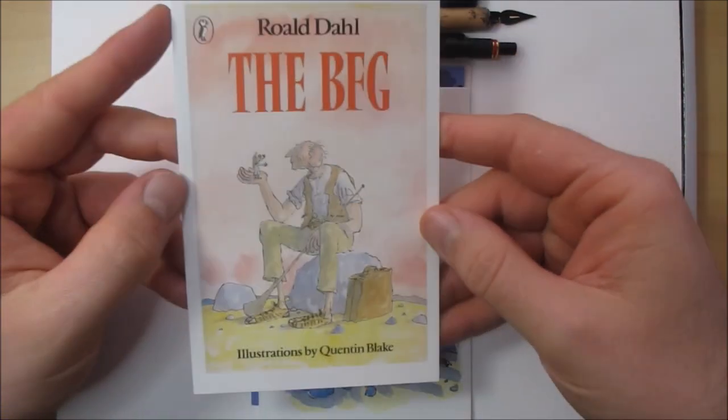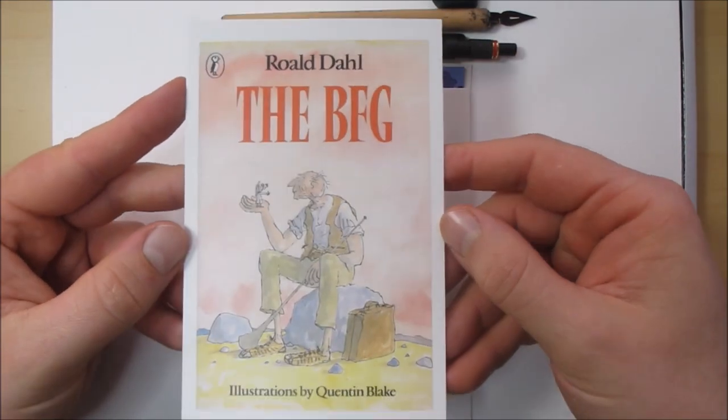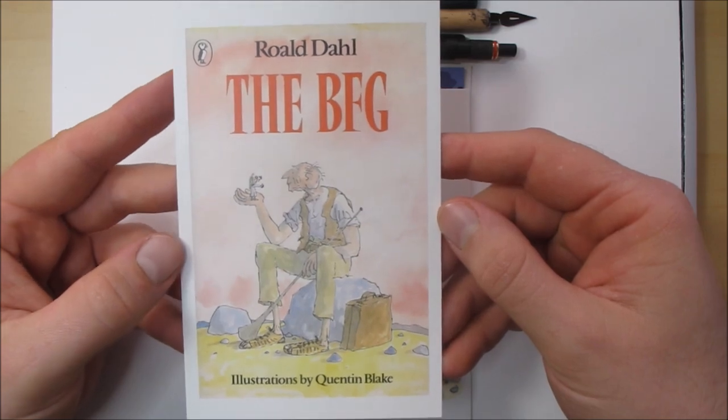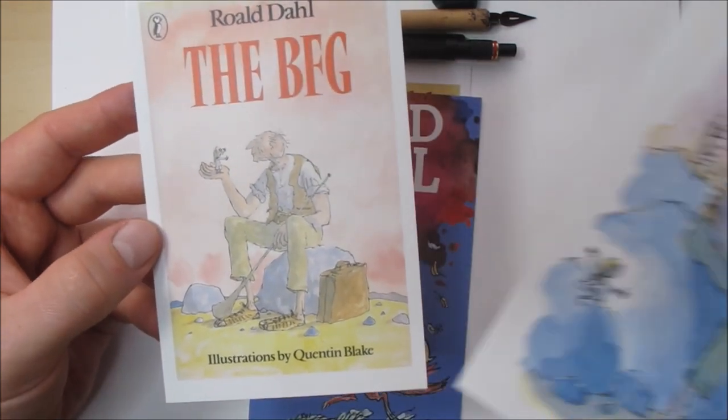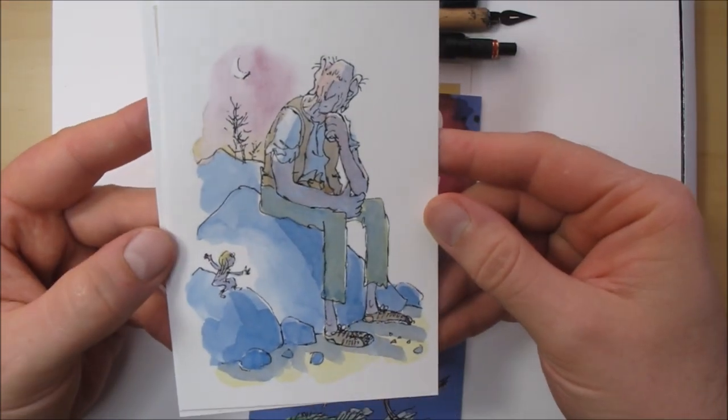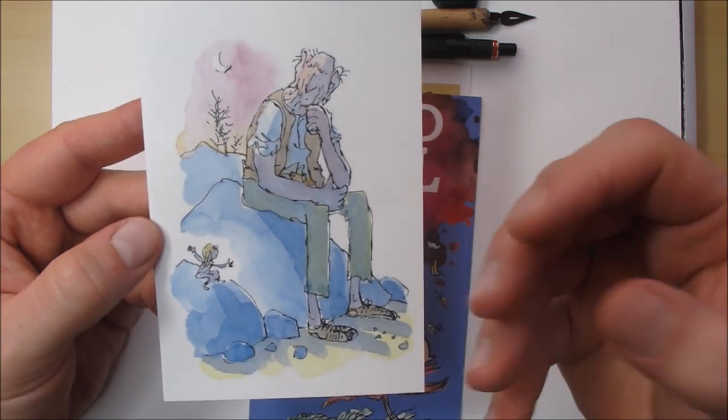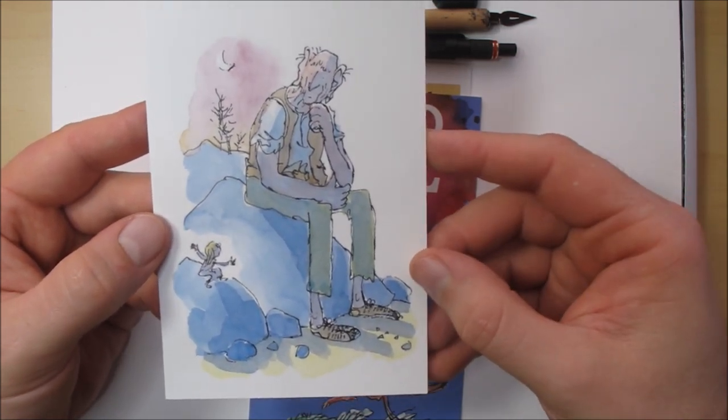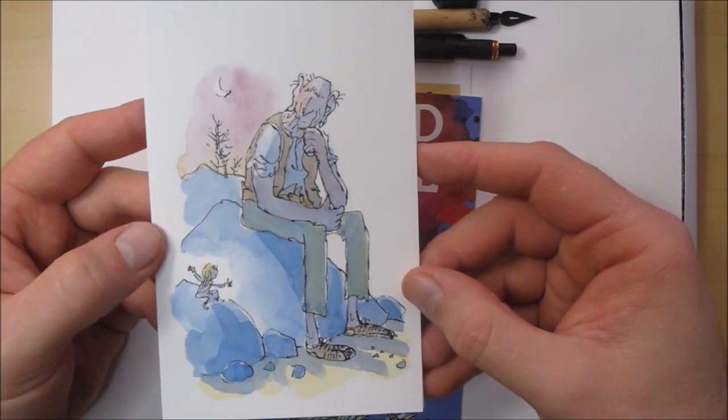I've got a couple of examples here of some of Quentin Blake's work. This is the BFG, of course. And as you can see, it's a simplistic style, although it's not simple to actually do.